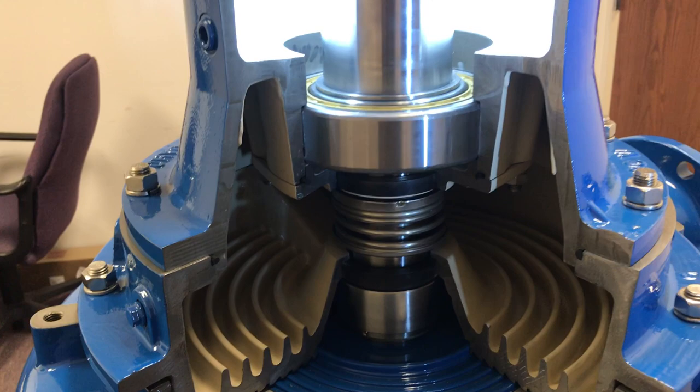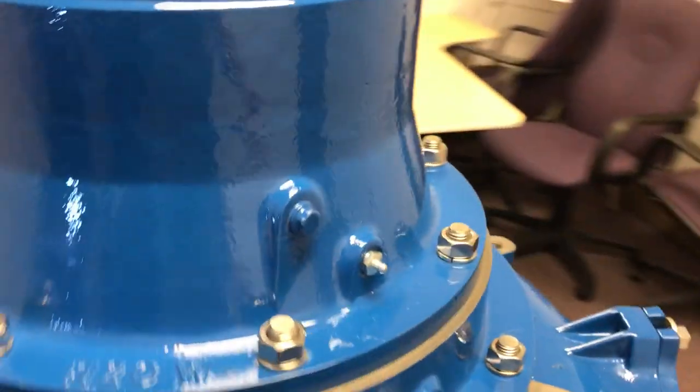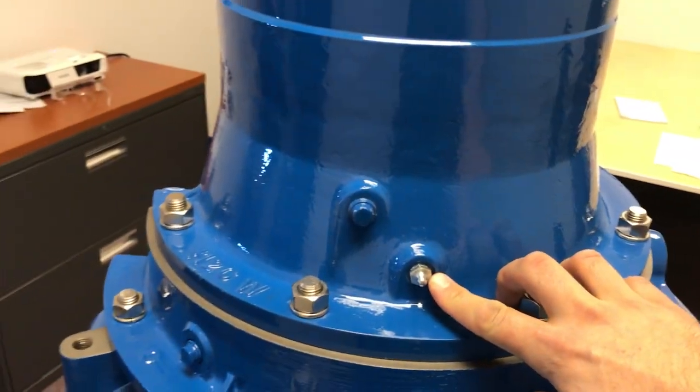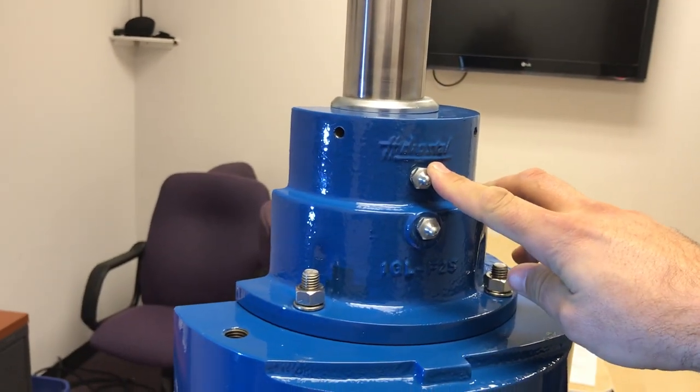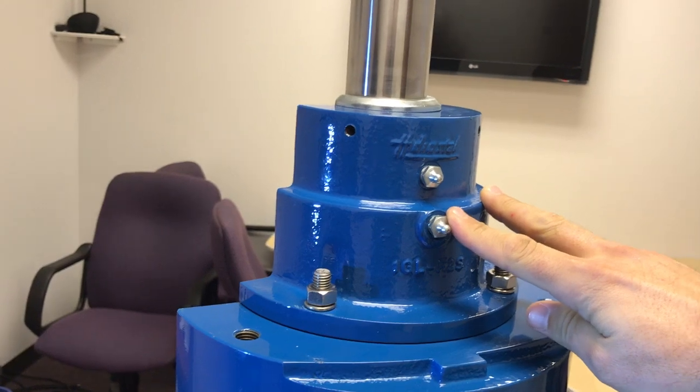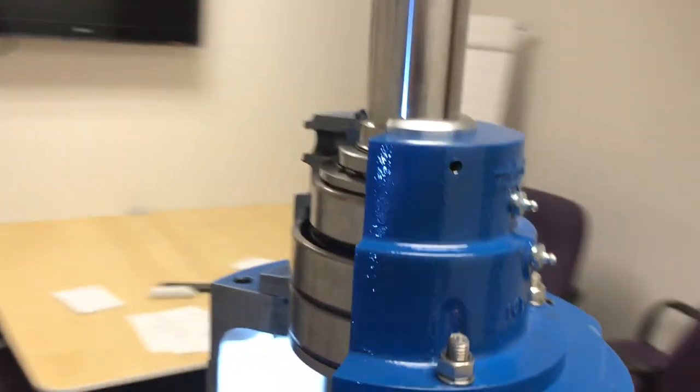To grease the bottom bearing you have a grease nipple down here and then to grease the top bearings you have a grease nipple up here for the roller and then for the angular ball contact bearings.